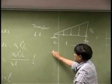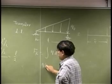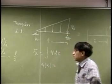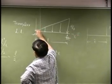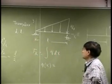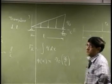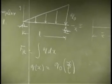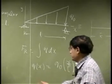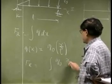The resultant FR is an integration of Q dx, so we need Q as a function of x. This is your x axis, this is the y axis. I can write this as Q = Q0*x/L, because when x is 0 the intensity is 0, and when x is L the intensity is Q0.